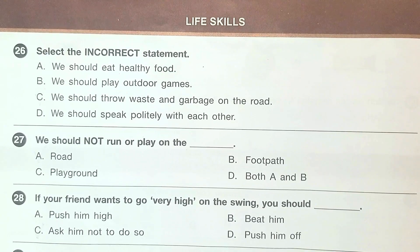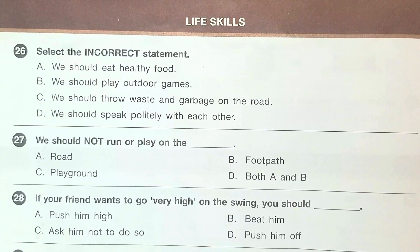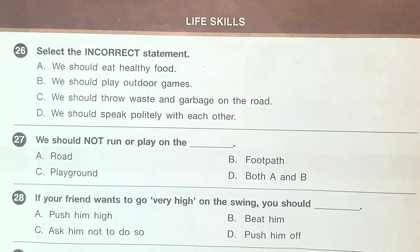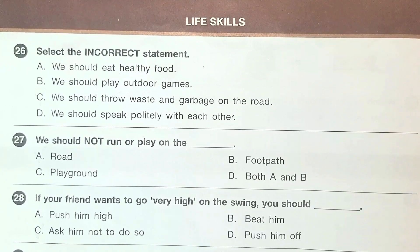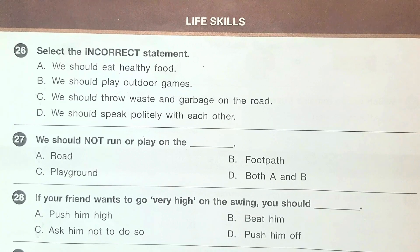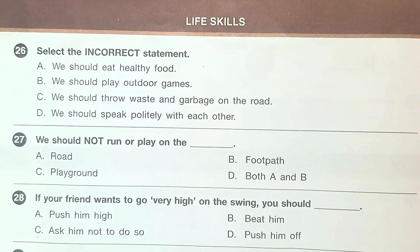26th question: select the incorrect statement. The answer is option C — we should throw waste and garbage on the road. 27th question: we should not run or play on the dash. The answer is option D, both A and B. 28th question: if your friend wants to go very high on the swing, you should dash. The answer is option C, ask him not to do so.